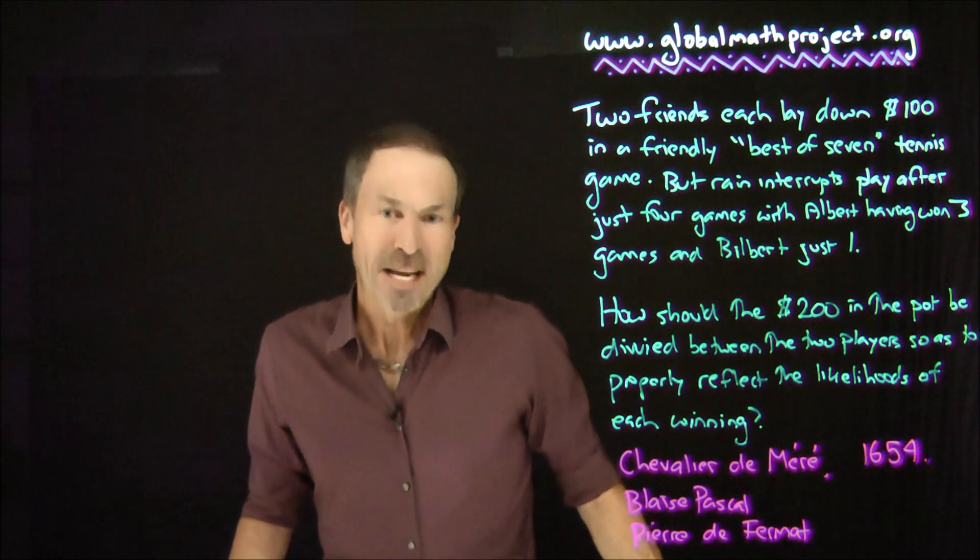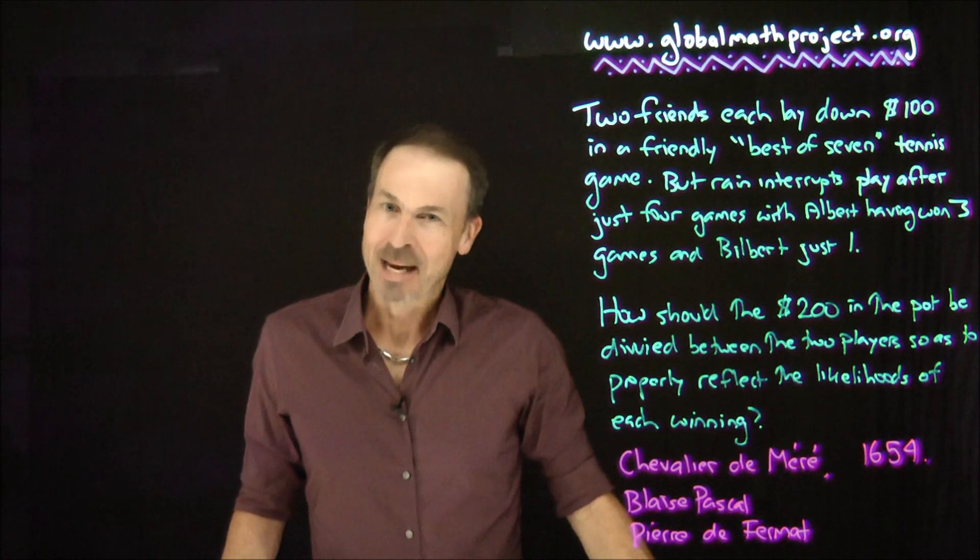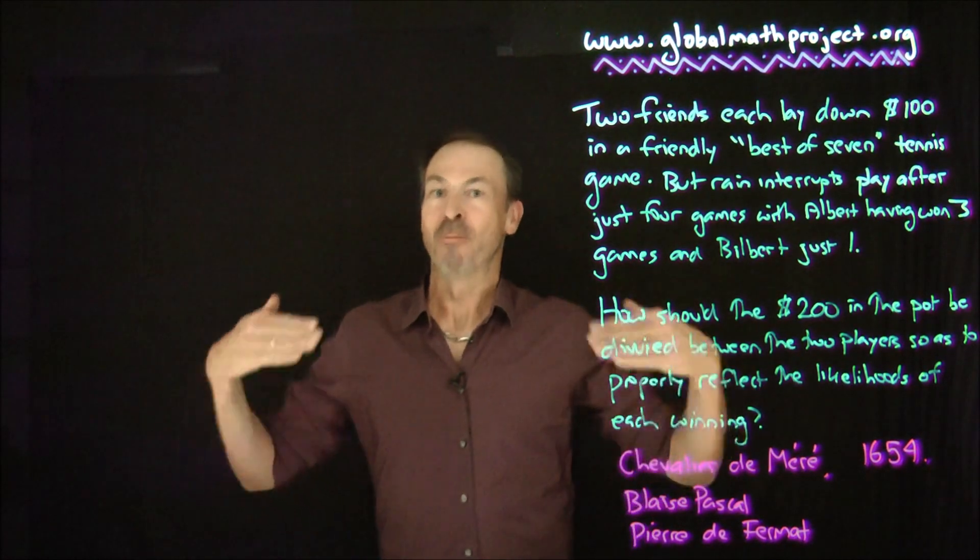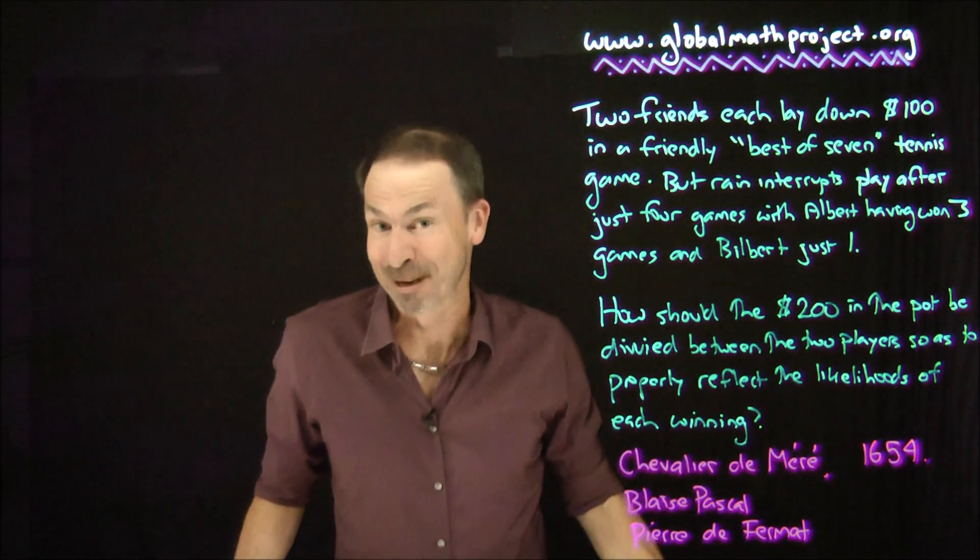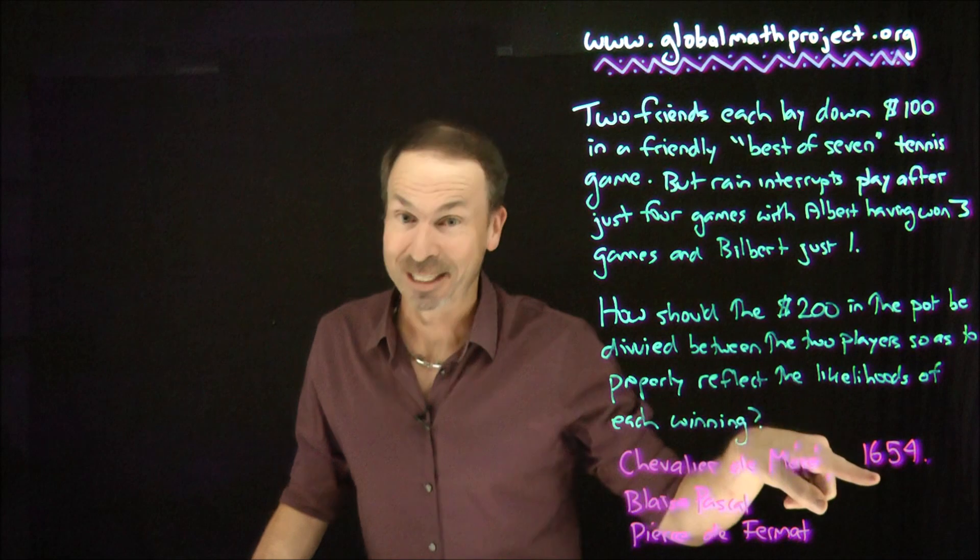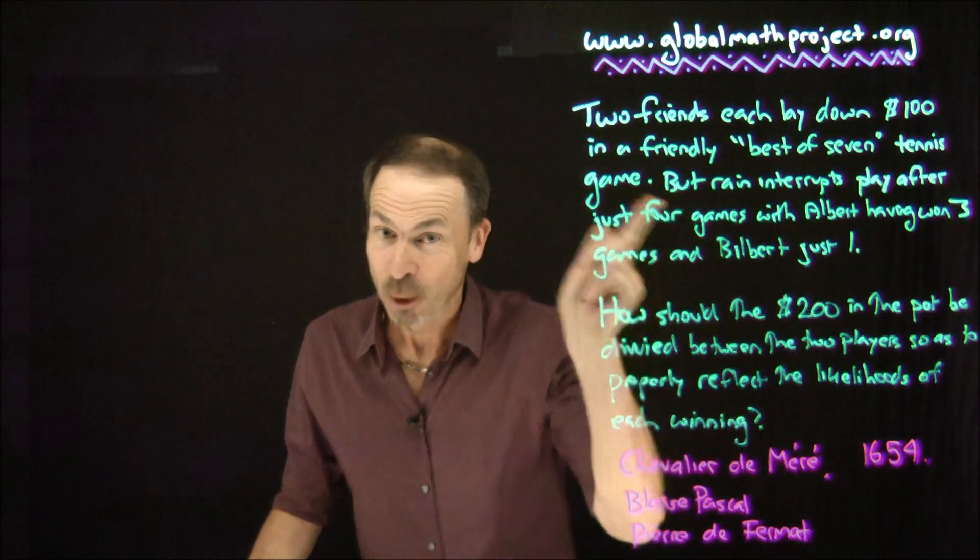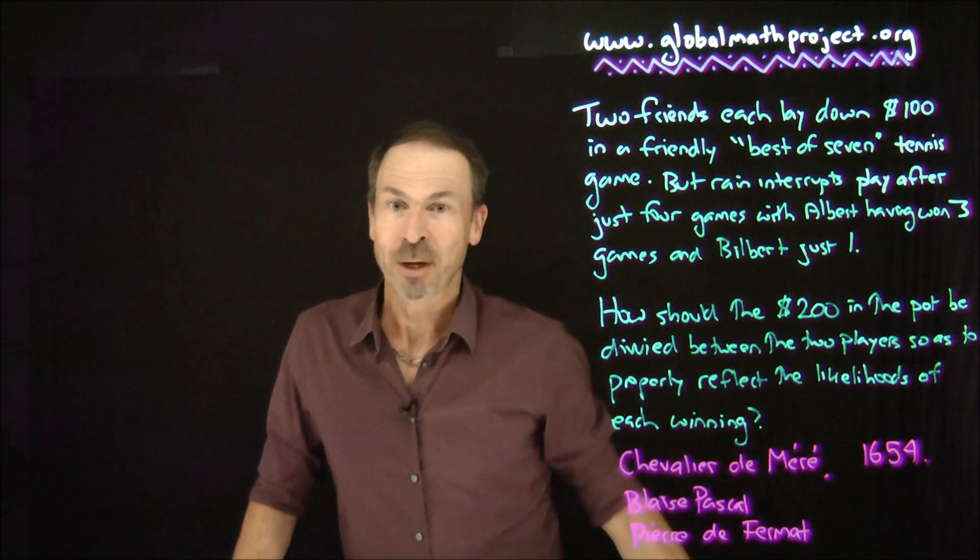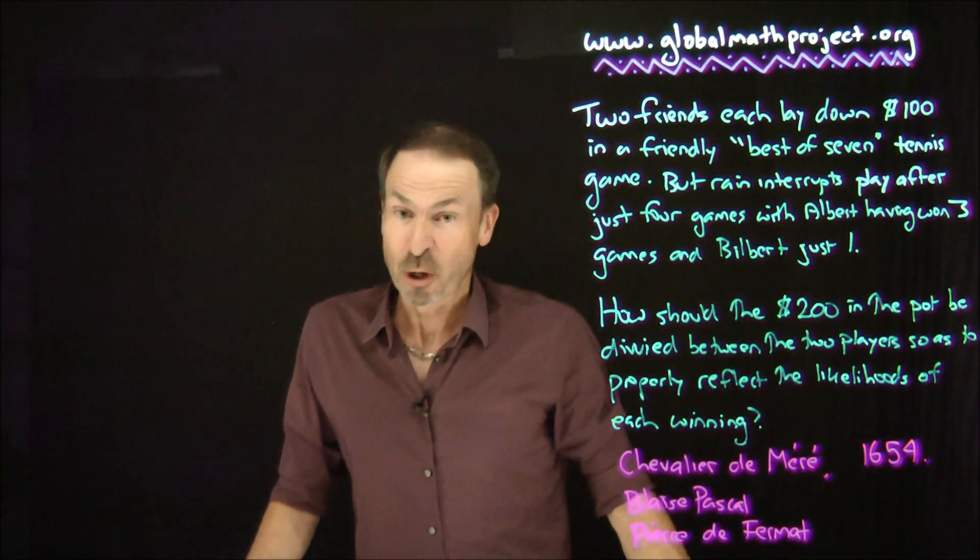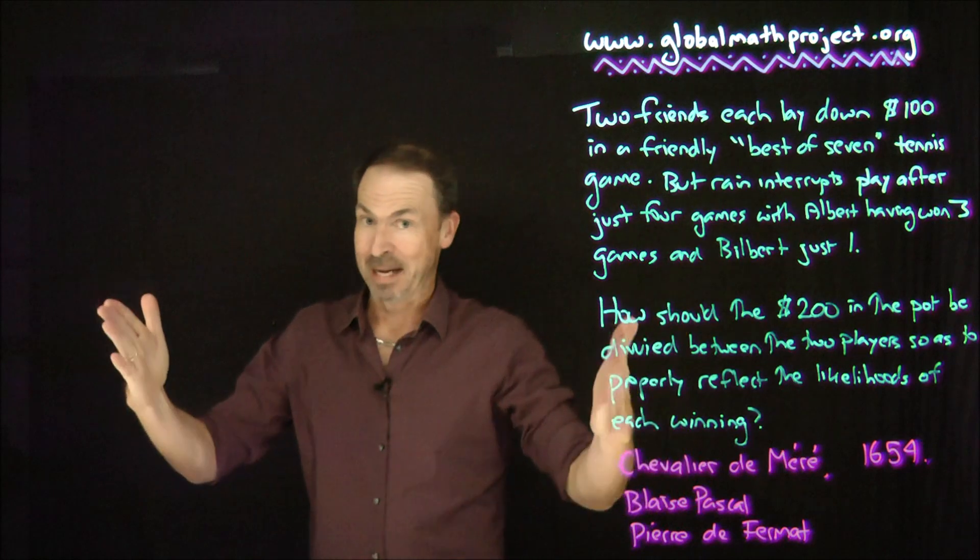G'day! Today I'd like to give a little bit of history to probability theory. The systematic treatment of probability theory that we know today can be pinpointed to one particular year in our history, namely the year 1654. It all began with a French nobleman, Chevalier de Méré, who asked a question. It was a question about the problem of points.